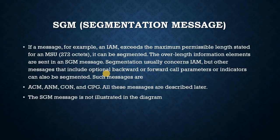SGM, Segmentation Message. If a message — for example, an IAM — exceeds the maximum permissible length stated for an MSU (272 octets), it can be segmented. The over-length information elements are sent in an SGM message. Segmentation usually concerns IAM, but other messages that include optional backward or forward call parameters or indicators can also be segmented, such as ACM, ANM, CON, and CPG. All these messages are described later. The SGM message is not illustrated in the diagram.